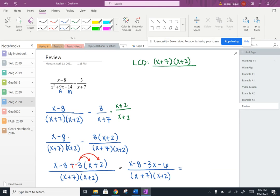Now I can combine like terms. So I have an x minus 3x, and then I also have a negative 8 minus 6. So let's see, x minus 3x is going to be negative 2x. So I have negative 2x, and then negative 8 minus 6 is going to be negative 14, all over x plus 7 times x plus 2.